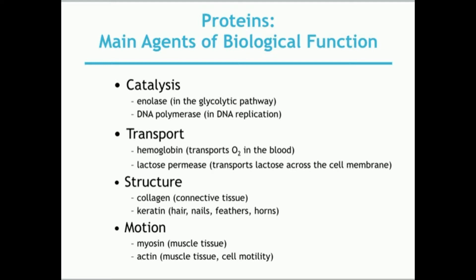Another function is transport — either through a watery medium like blood, or across a barrier such as the plasma membrane. Hemoglobin, for example, is a protein that transports oxygen through the blood to our tissues so they can have energy. Lactose permease transports lactose, a disaccharide, across plasma membranes so that different cells can receive it. This transport protein plays more of a role in bacteria.